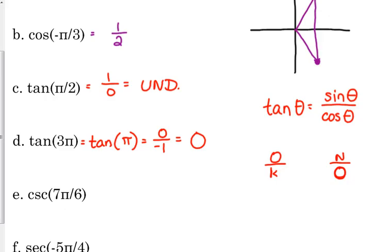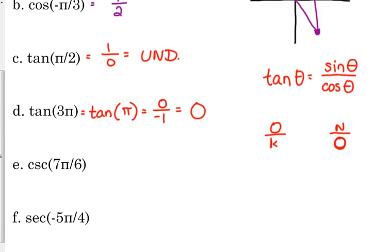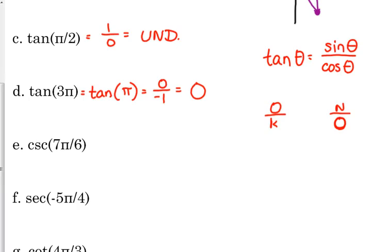All right. What if we got cosecant? Well, which trig ratio is cosecant related to? Do I remember? Sine. Remember the cos don't go together. So cosecant goes with sine, not cosine. So this is equal to 1 over the sine of 7π over 6.